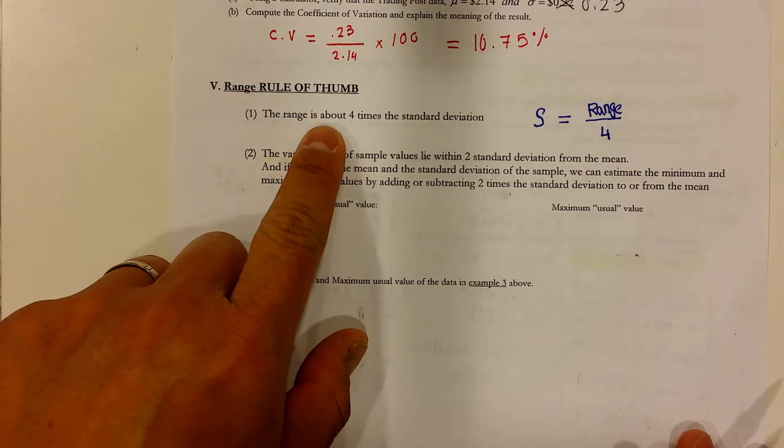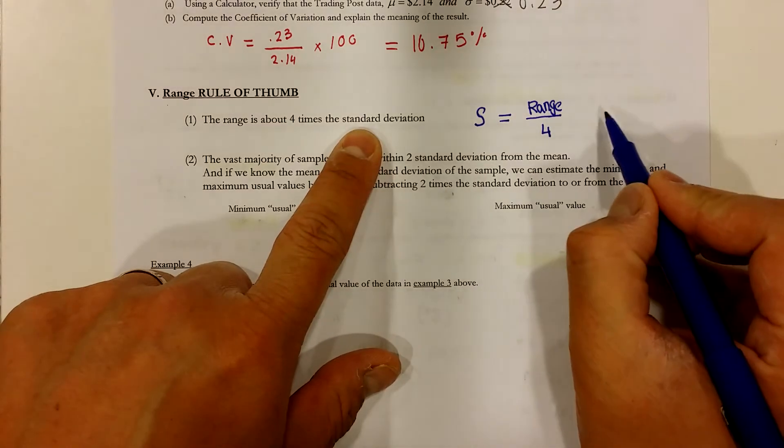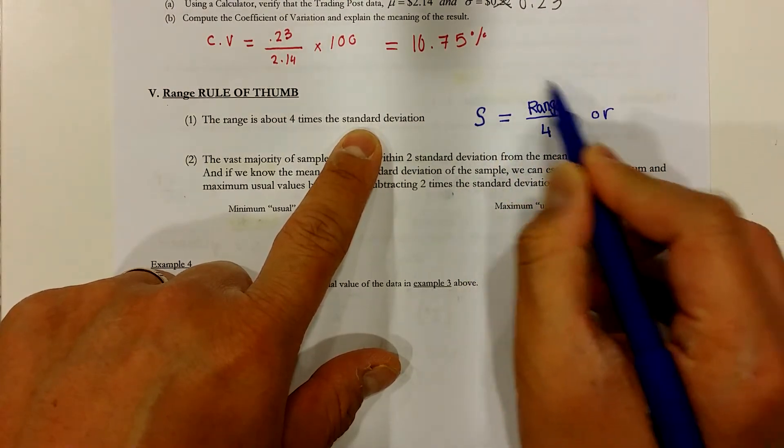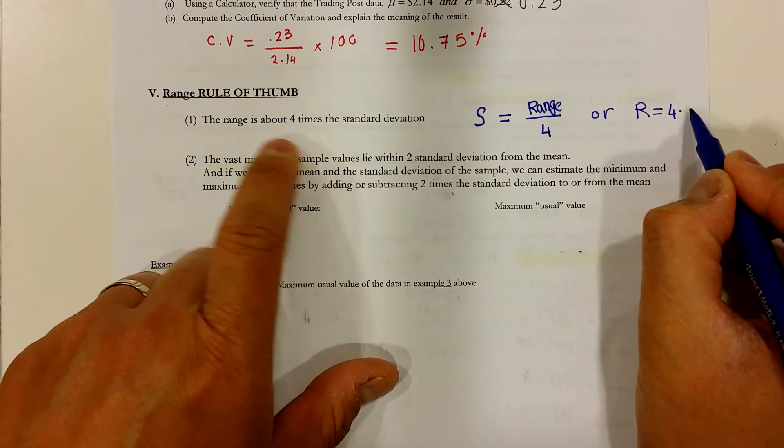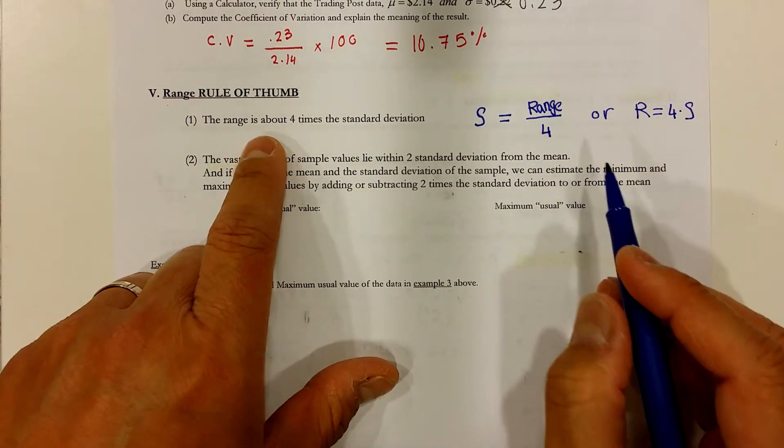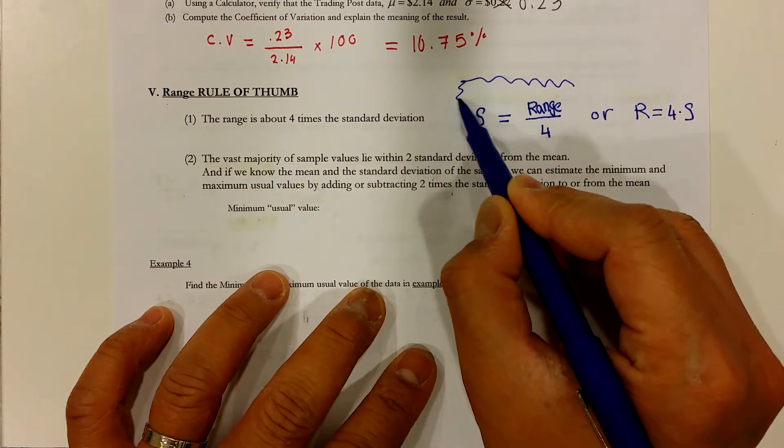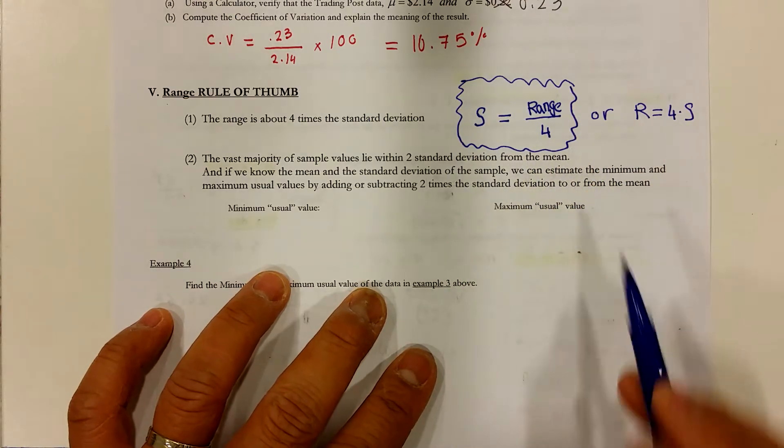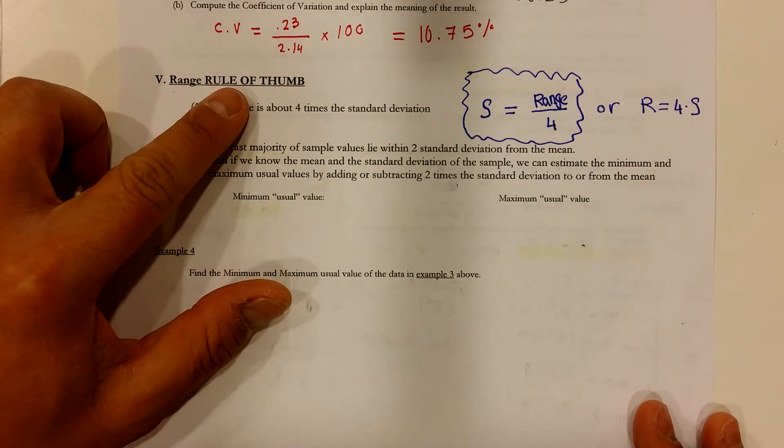The range is about 4 times the standard deviation. One other way for us to express what we just did here is to say that the range equals 4 times the standard deviation. But this is what we're kind of interested in if we're in a hurry to calculate the standard deviation. Hopefully, that's one thing that you can get out from the rule of thumb.